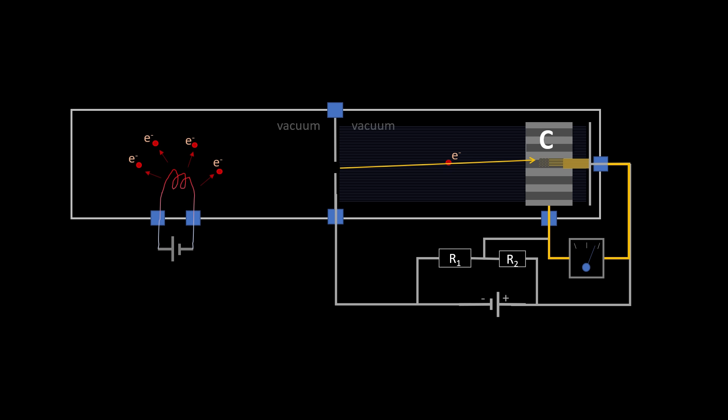And so now this single electron can generate a statistically significant event, namely a current that can be detected on the macroscopic scale.